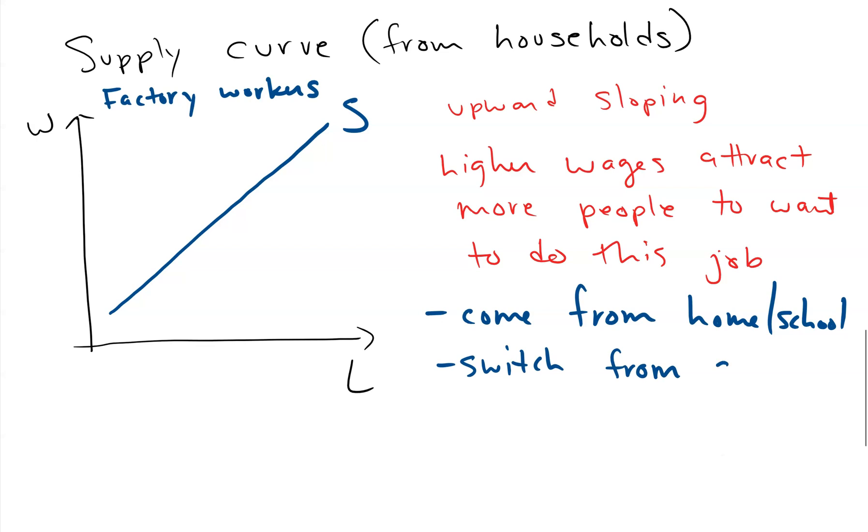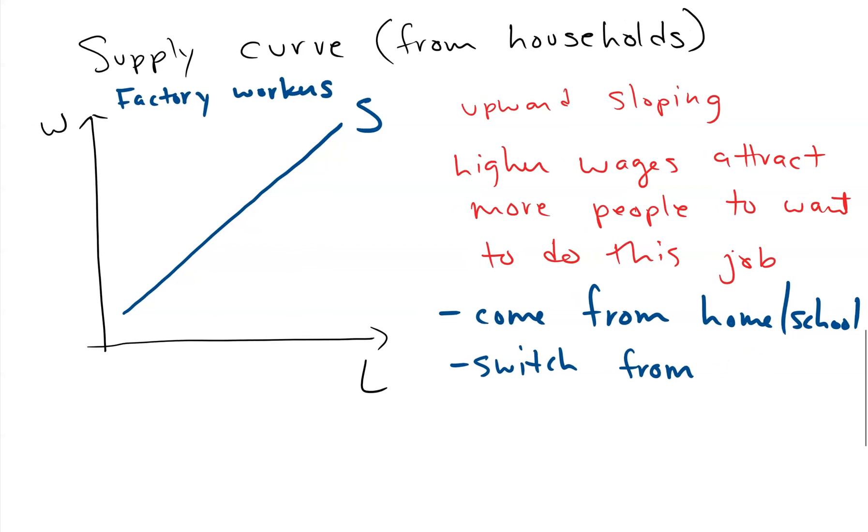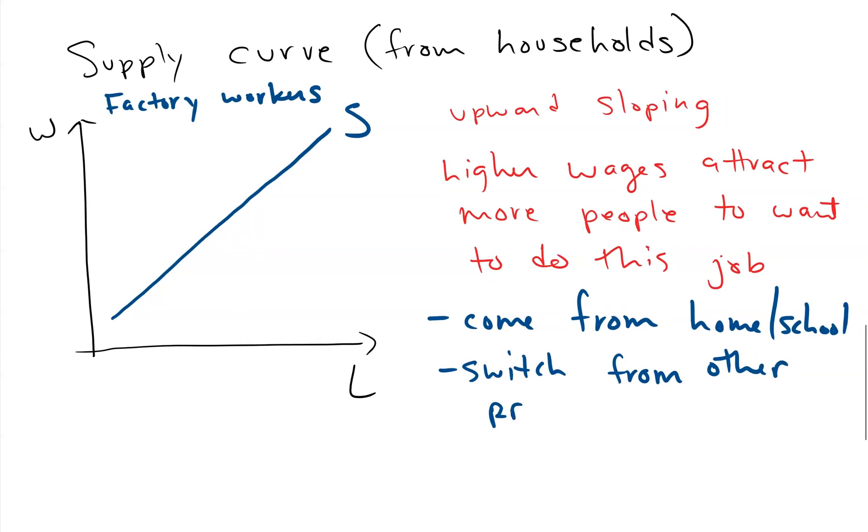They could also be switching from other professions. Maybe right now you're driving Uber, and this probably won't happen but let's suppose there starts to be big growth in production with more jobs available at high wages in manufacturing. You switch from driving Uber and get a job at a factory because it's paying more. When the wage was lower you weren't willing to do this job because maybe you didn't like it or thought it was less flexible, but when the wage gets high enough you become willing.